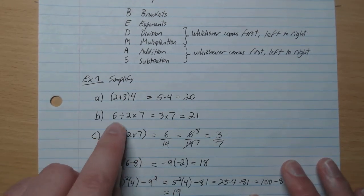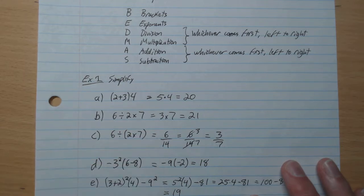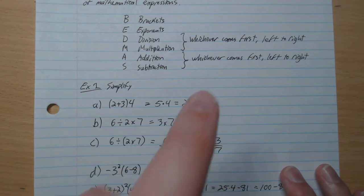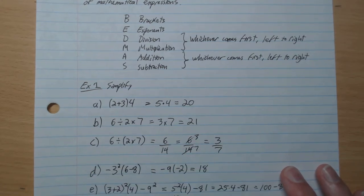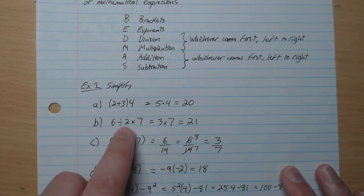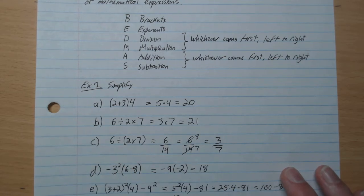B. 6 divided by 2 times 7. Now we notice that there's only division and multiplication here. And so the rule, the standard rule, is that you have to go whatever comes first. So here 6 divided by 2 comes first, gives 3. And then that answer times 7 gives 21.